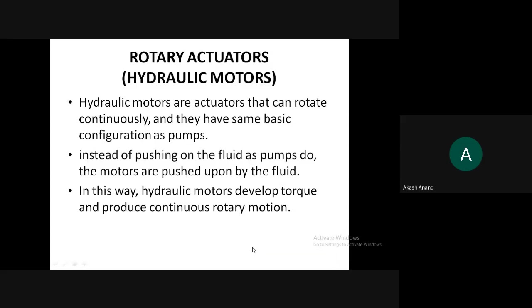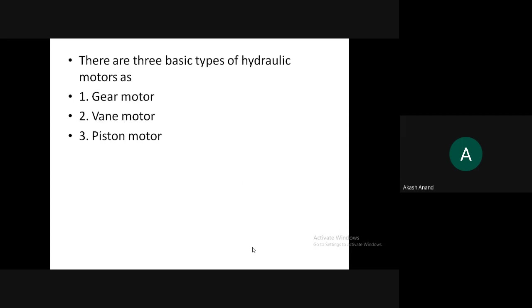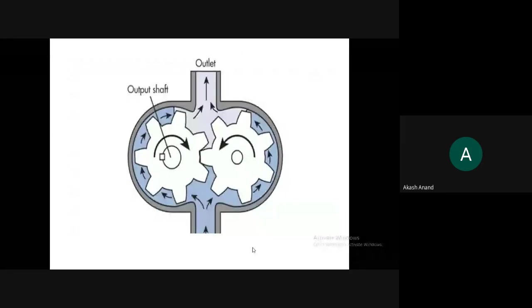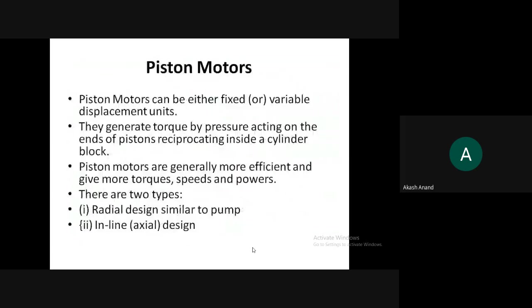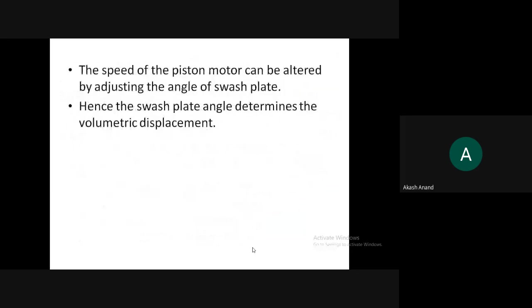In last class we were discussing about rotary actuators, mainly focused on hydraulic type rotary actuators, also known as hydraulic motors. We are already familiar with three types: gear motor, vane motor, and piston motor. The basic principle is that the working fluid creates a pressure difference, and with the help of that pressure difference the rotary components rotate.